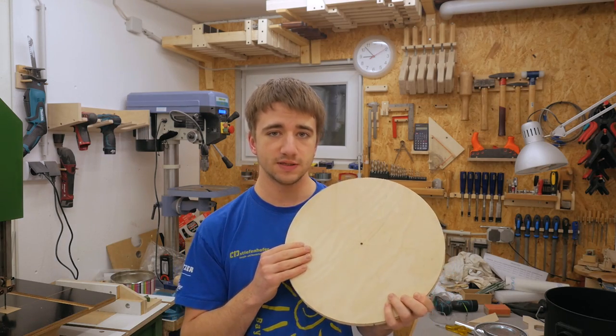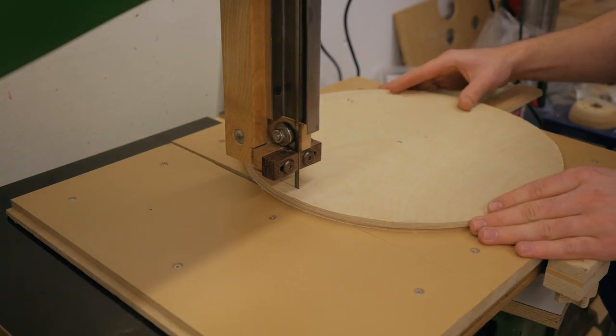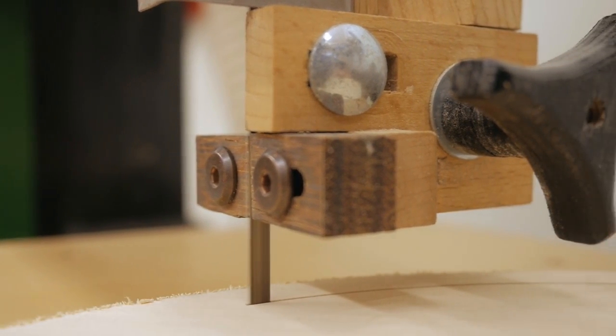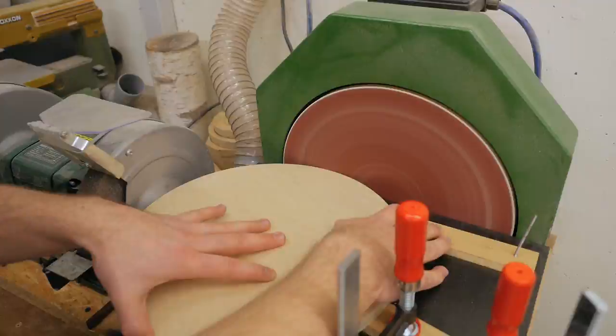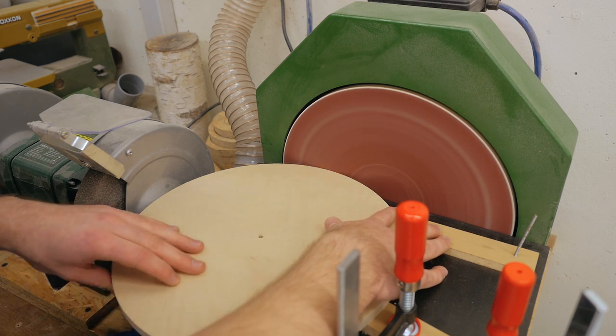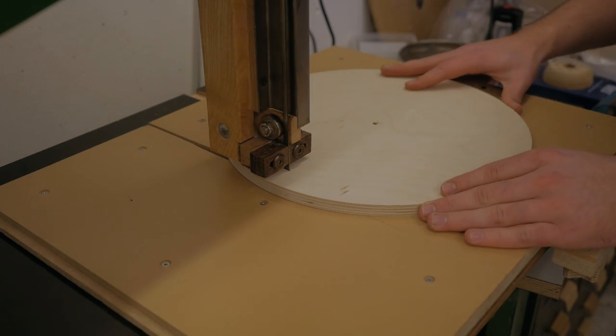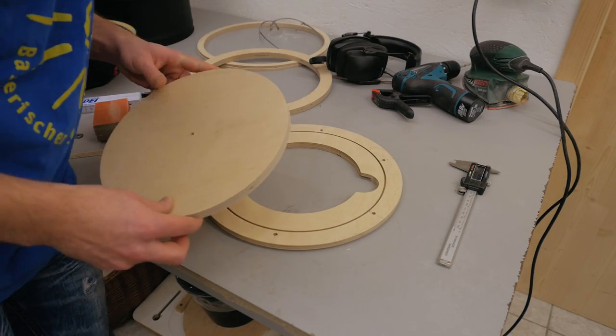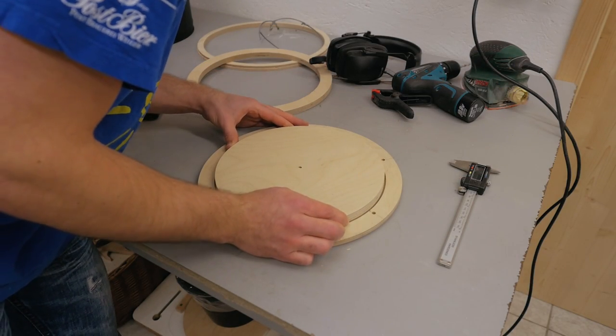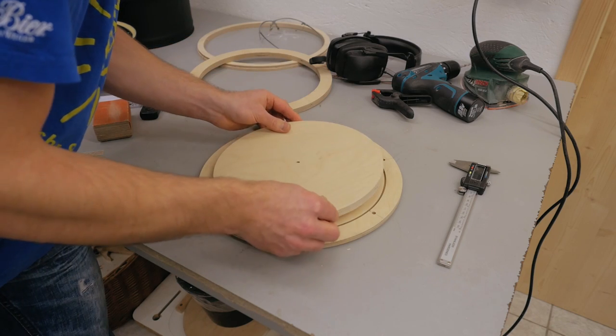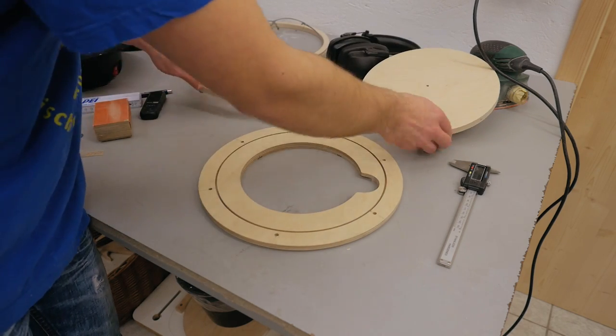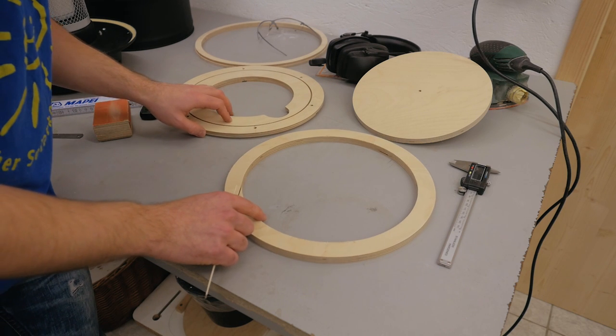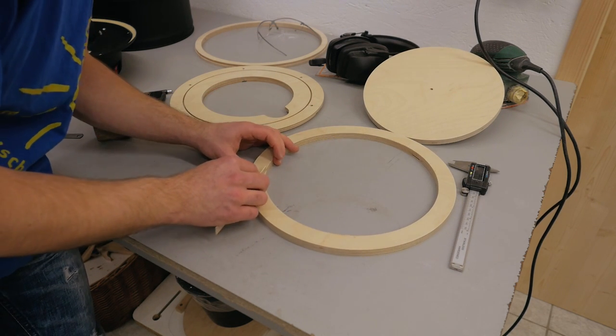Alright, now making the other two rings and I can cut both of them from one piece. The small disc I sanded until it had the exact same size as this one here, and the bigger ring I need to glue back together.